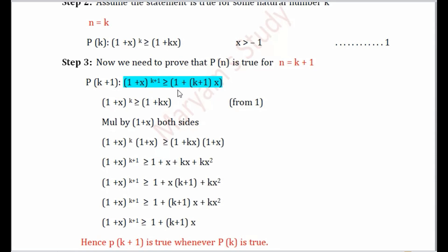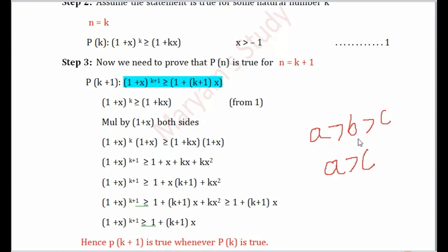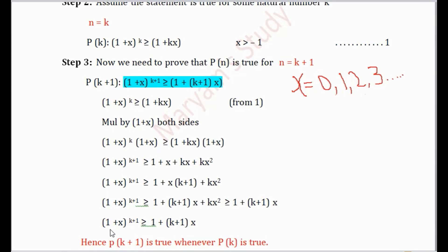We now see the exact picture of P(k+1), which is 1+(k+1)x, but with an extra kx² term. Since kx² ≥ 0, the expanded expression 1+(k+1)x+kx² is greater than or equal to 1+(k+1)x. By transitivity — if A ≥ B and B ≥ C, then A ≥ C — we conclude (1+x)^(k+1) ≥ 1+(k+1)x. This holds for all x > -1, satisfying all the required conditions.